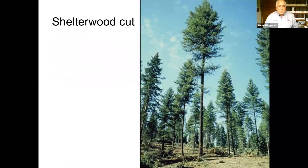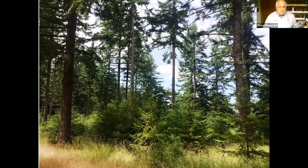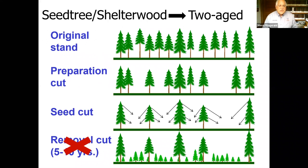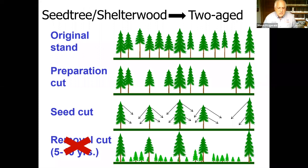Now we're going to move on to two-aged management. Two-aged is like taking your shelterwood and instead of taking the overstory trees off in the removal cut at the end, you leave the overstory on. We have some examples of this — some landowners for whom we've written up case studies.